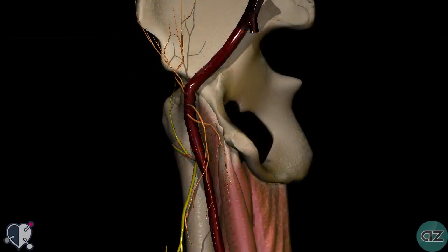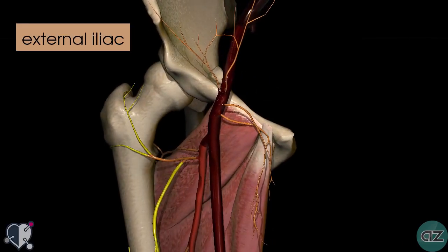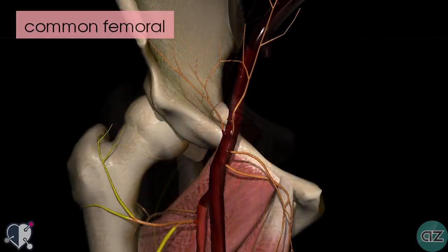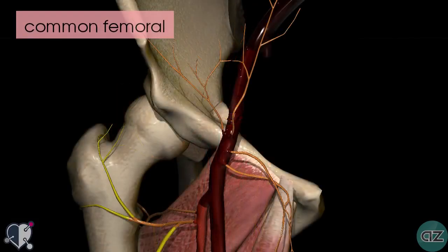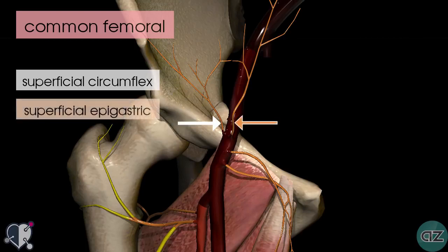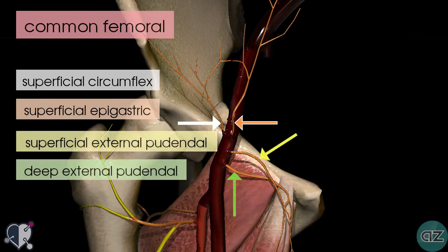Looking at this model, we can see the external iliac artery, which passes under the inguinal ligament to become the common femoral artery. The common femoral artery enters the femoral triangle and gives off four branches: the superficial circumflex branch, the superficial epigastric branch, the superficial external pudendal, and the deep external pudendal arteries.